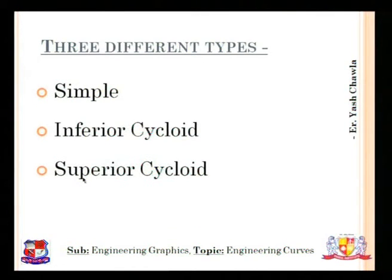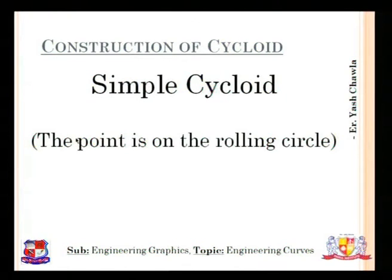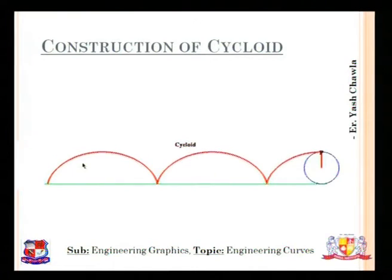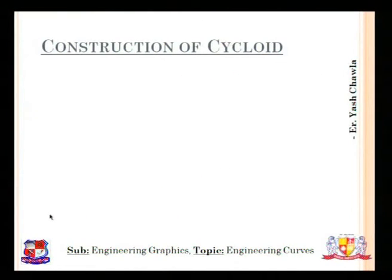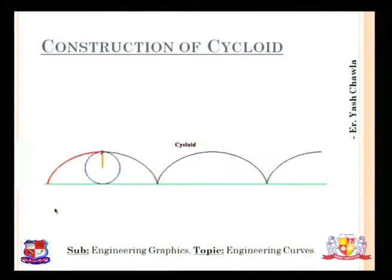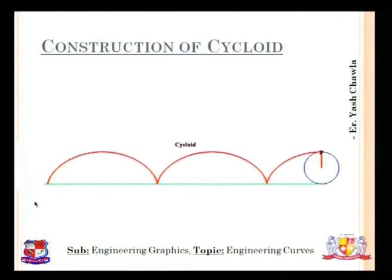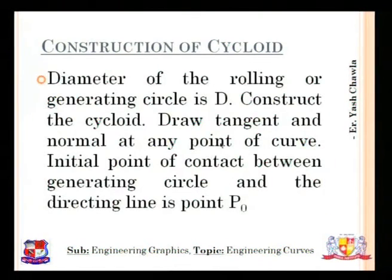There are three types of cycloids: simple cycloid, inferior cycloid, and superior cycloid. In a simple cycloid, the point is on the rolling circle. The animation shows point P on the blue rolling circle moving along the green directing line, tracing the red curve — that is the cycloid.